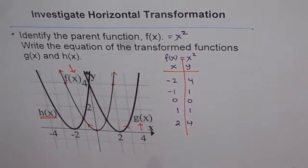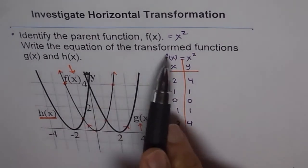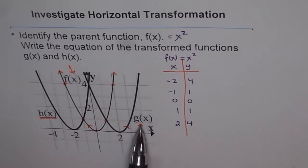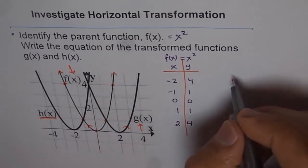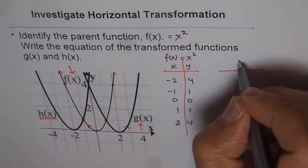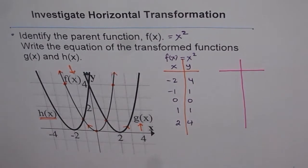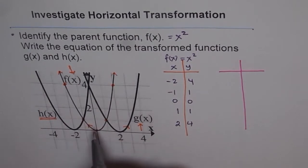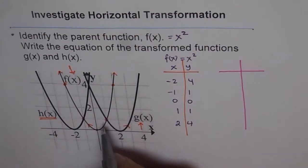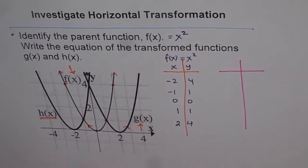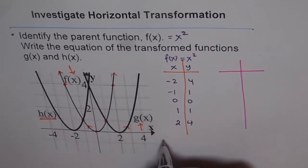Now we will write the equation for the transformed functions — I will do g(x) and leave h(x) as an exercise. Analyzing g(x): what do we notice when we compare with f(x)? The shape is congruent — this is the most important observation. If the shape is congruent, then the only transformation that has happened is translation. So we conclude: congruent shape.